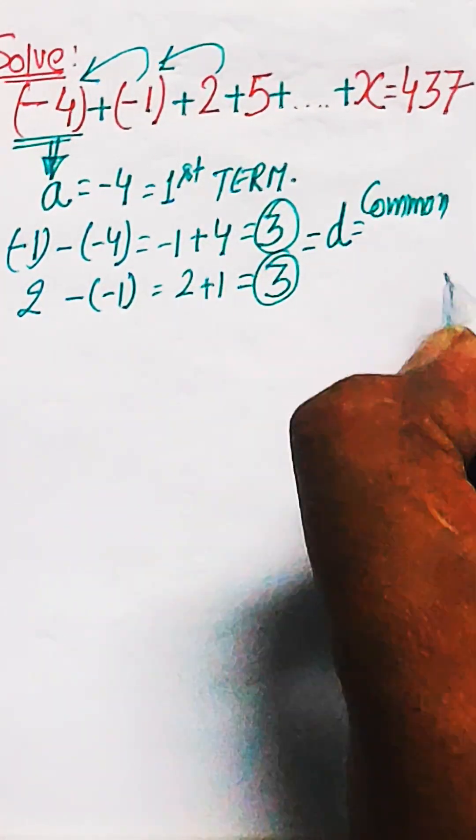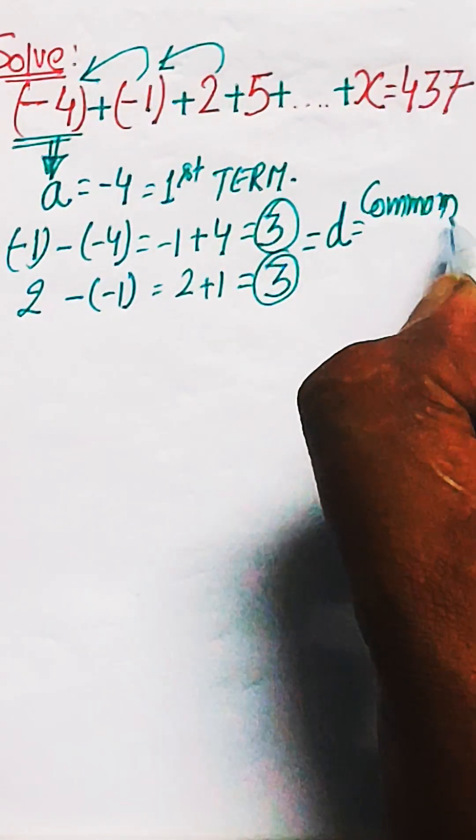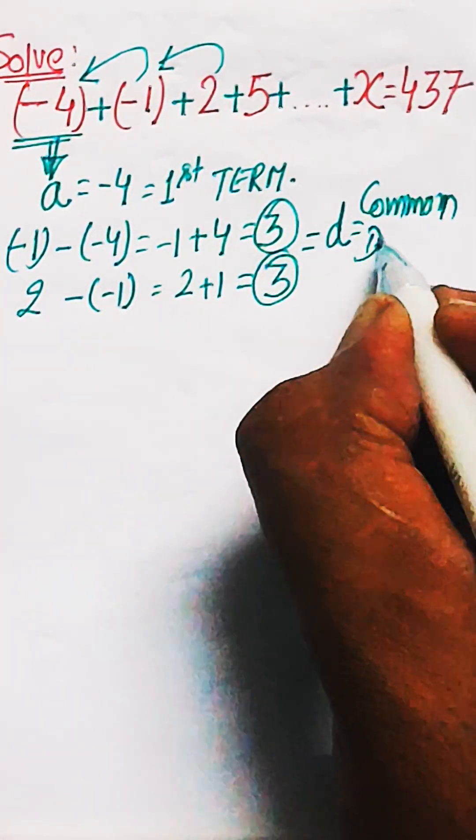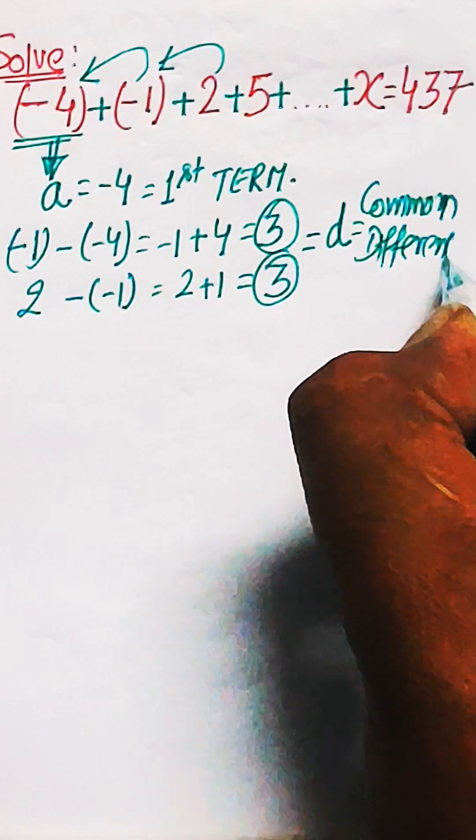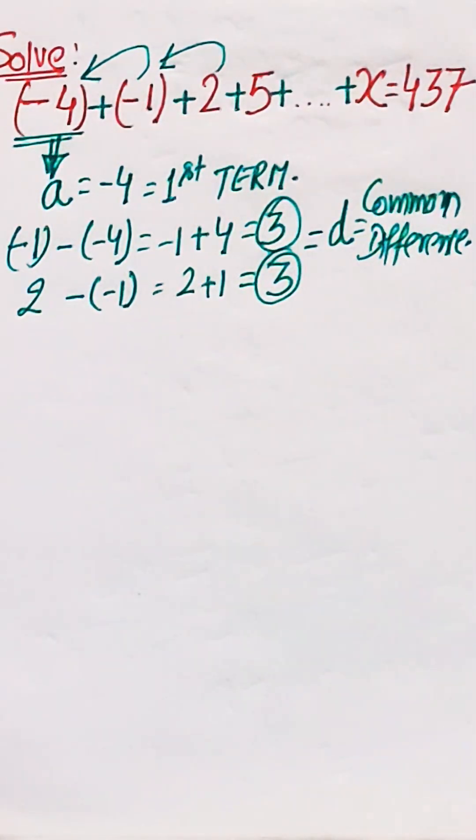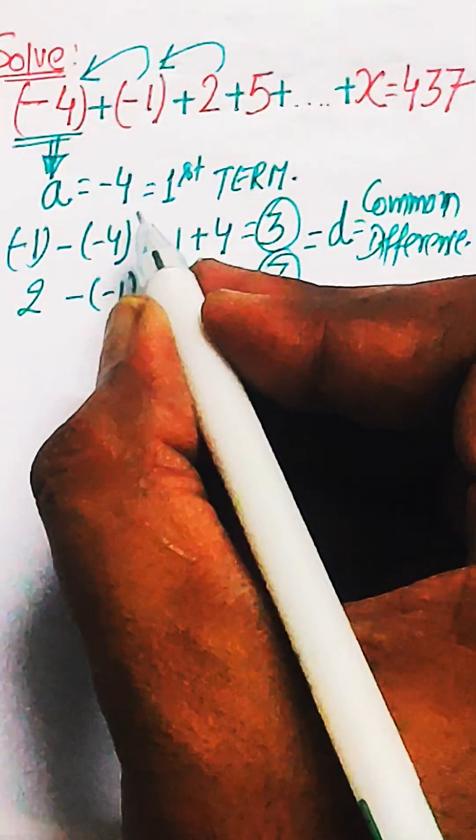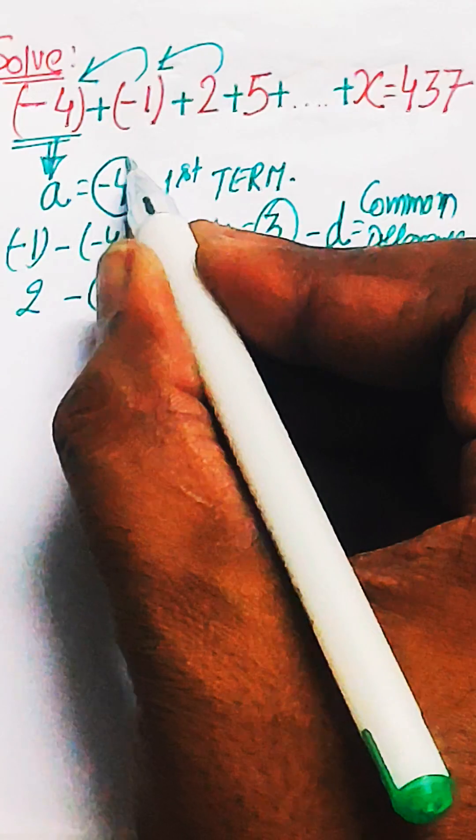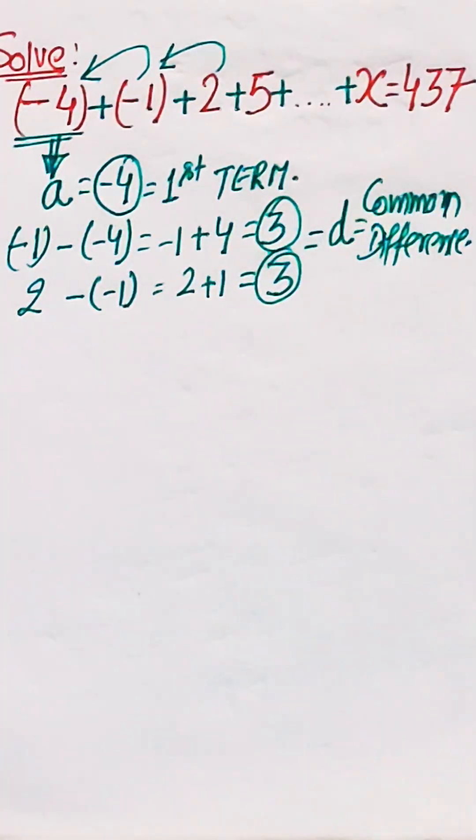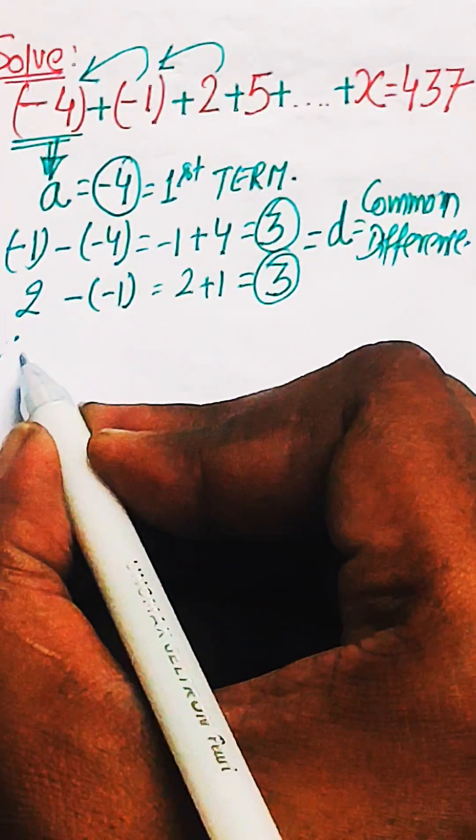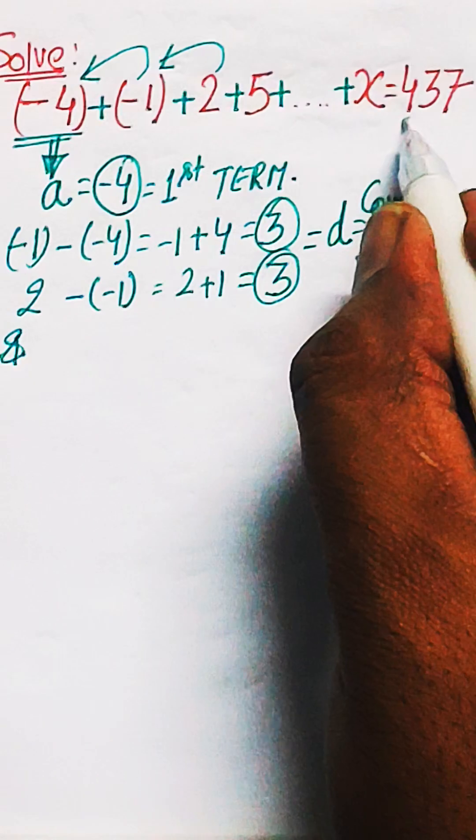Now in this question of AP, the basic parameters A and D, the first term and the common difference is known to us now. So here you can also see 437 as given on the RHS. I just circled the first term and the common difference, minus 4 and 3.